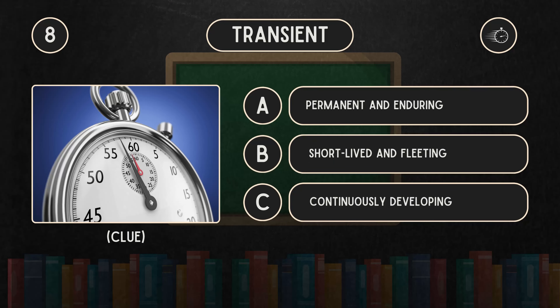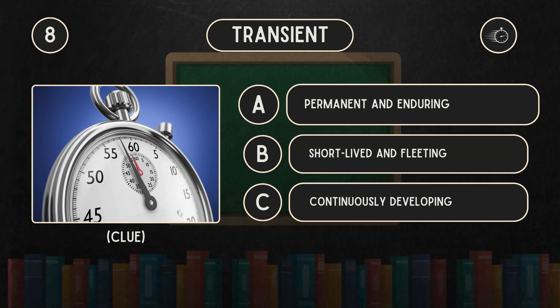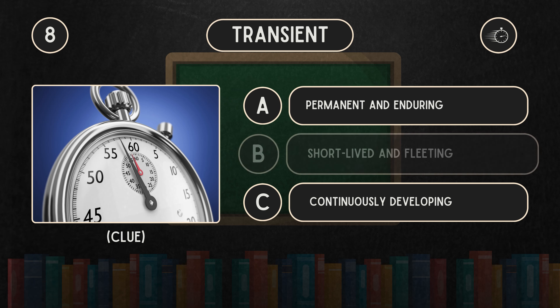What does transient mean? Is it A: Permanent and enduring. B: Short-lived and fleeting.